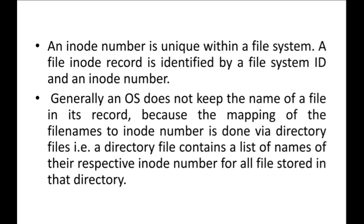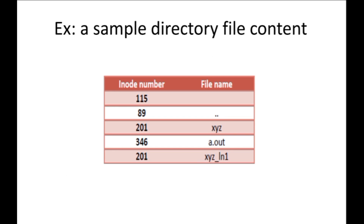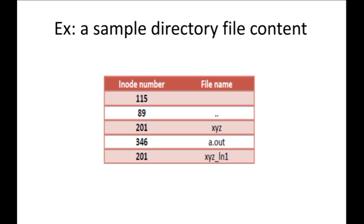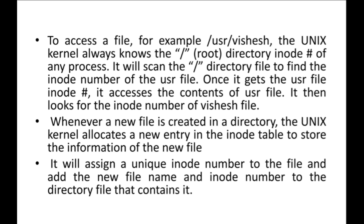Generally the OS does not keep the name of the file in its record, because the mapping of file names to INODES numbers is done through directory files. A directory file contains a list of names and their respective INODES numbers for all files stored in that directory. The OS does not keep this track — directory files keep track of this.